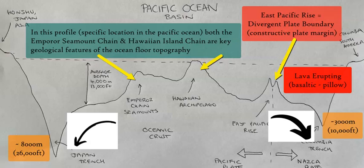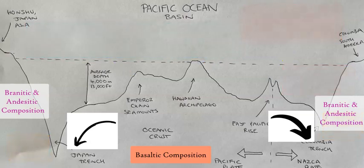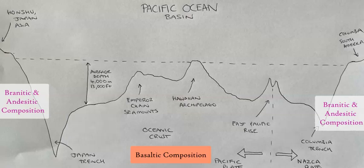The two trenches on either side of this profile — the Japan trench and the Colombian trench — are created by the subducting oceanic slabs of the Pacific plate and the Nazca plate respectively. These plates subduct due to the difference in density between the dense basaltic oceanic rock and the lighter continental rock of granite and andesite. These subduction zones along the coastlines cause volcanism, earthquakes, tsunamis, and other activity, creating the Pacific Ring of Fire, which accounts for the majority of active volcanoes on the planet.